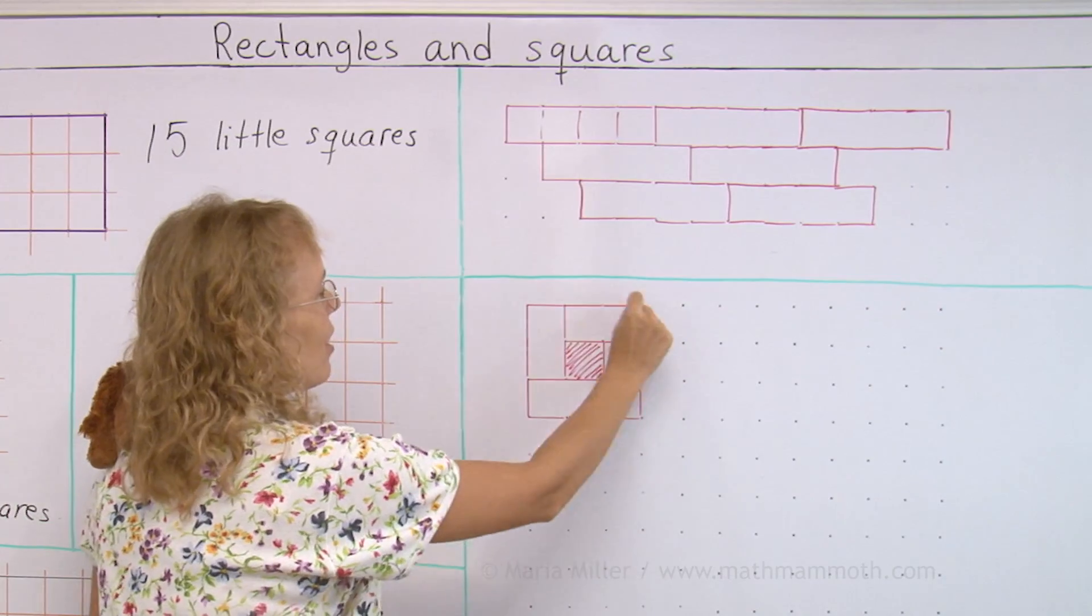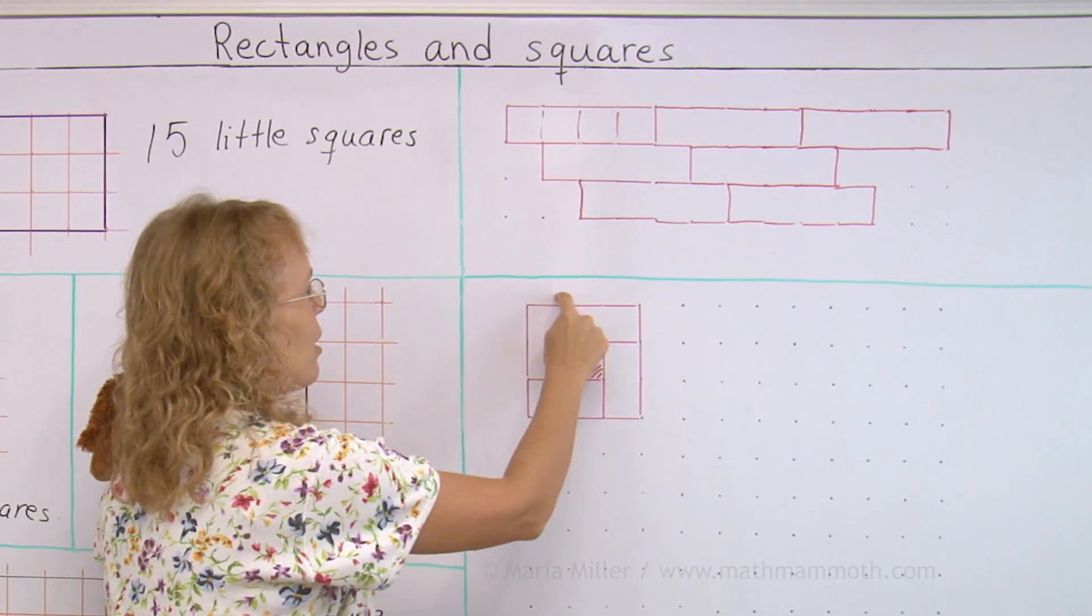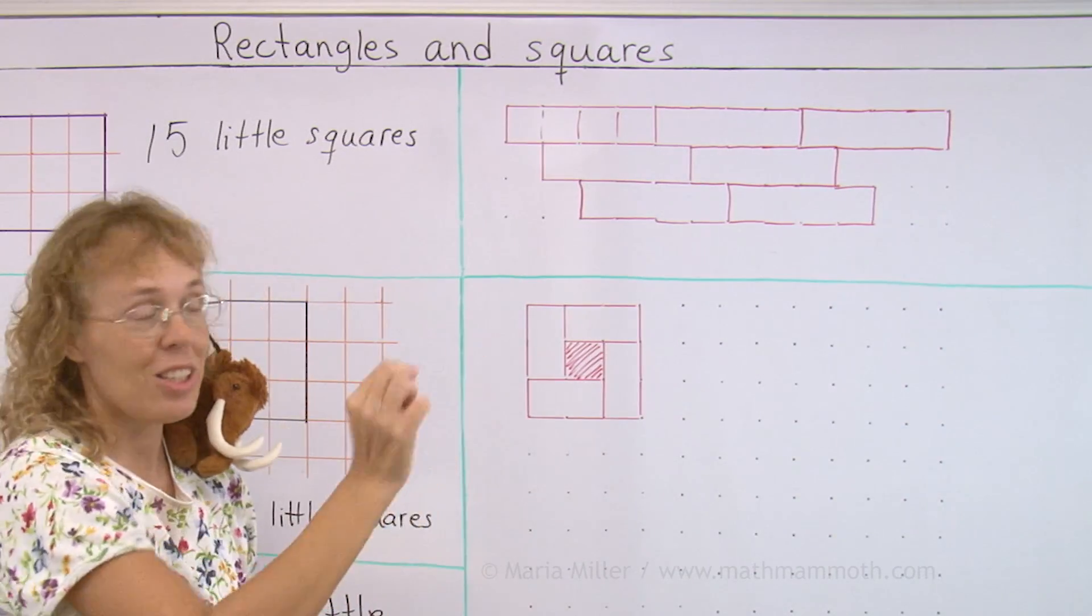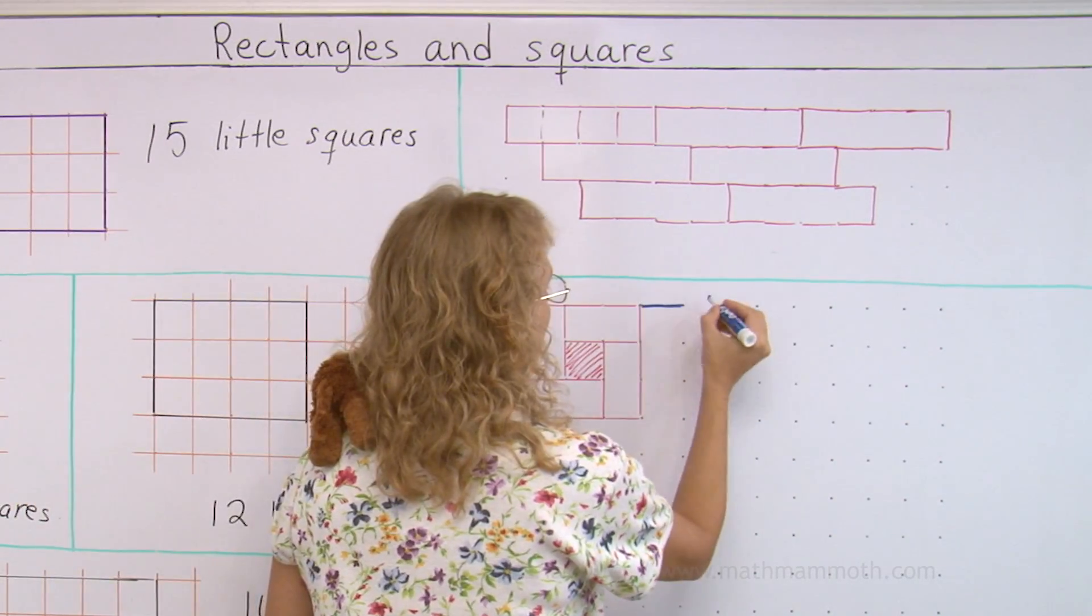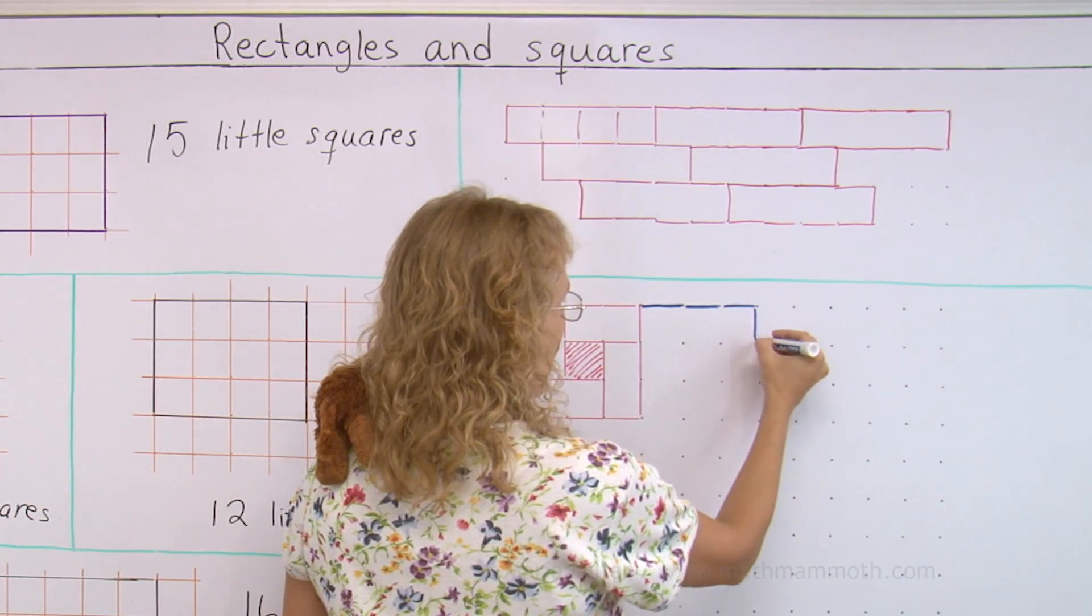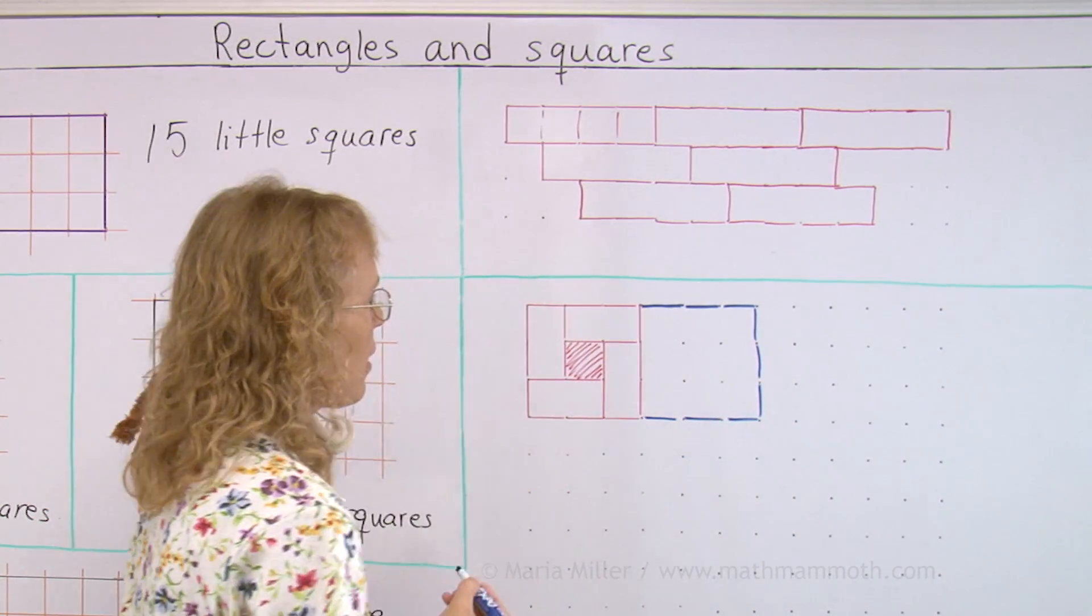And all in all, this here forms a square, right? A square that is one, two, three. Three units long. Let me make the next one in blue. One, two, three. And one, two, three. Like that.